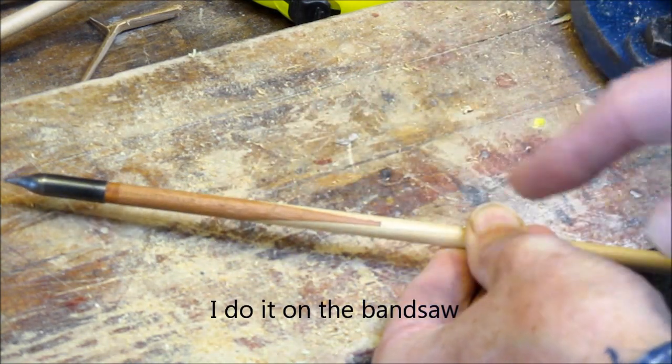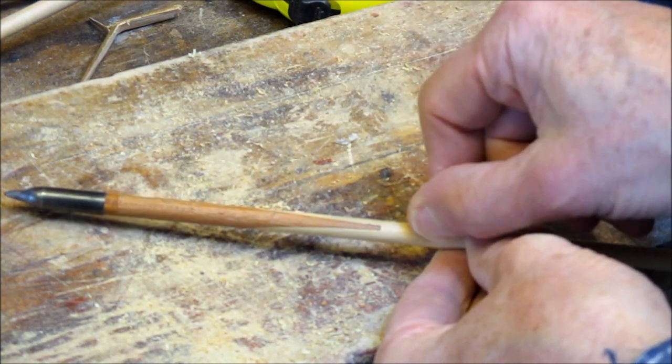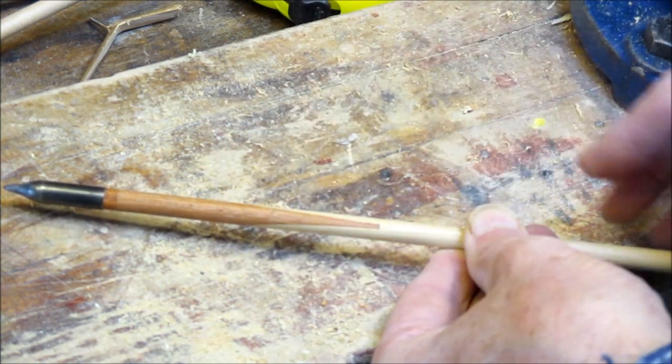oh you just cut a slot and you force this end in and it spreads it out. But of course it tends to split the wood even if you steam it. So you're better off cutting a bit of a V.